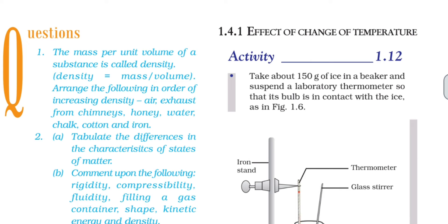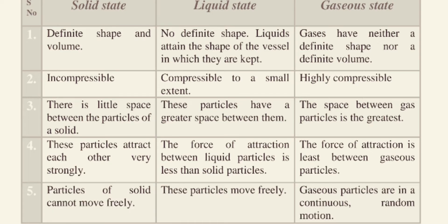Second question: tabulate the differences in the characteristics of states of matter. The table covers solid state, liquid state, and gaseous state — these are the three states.